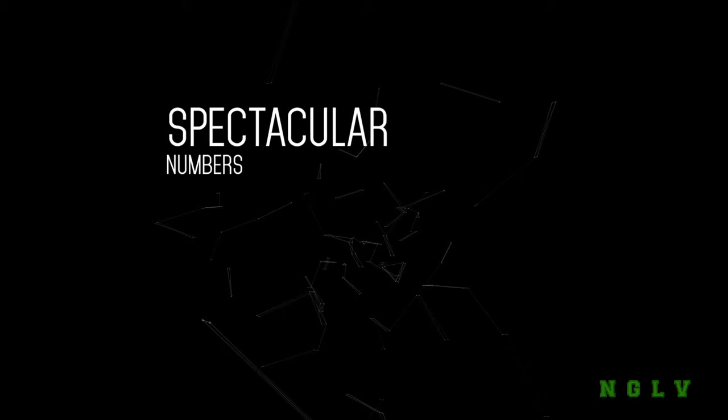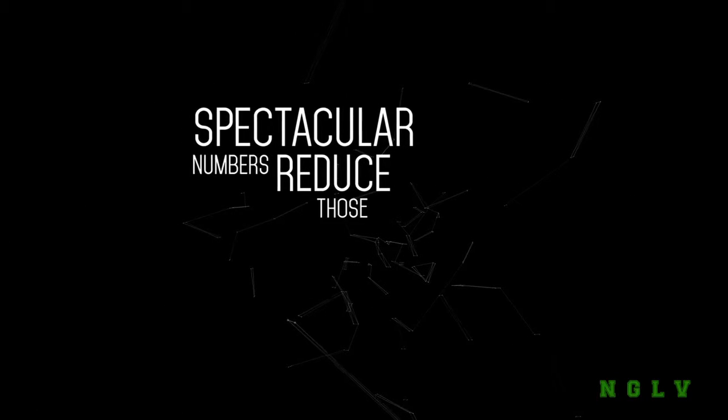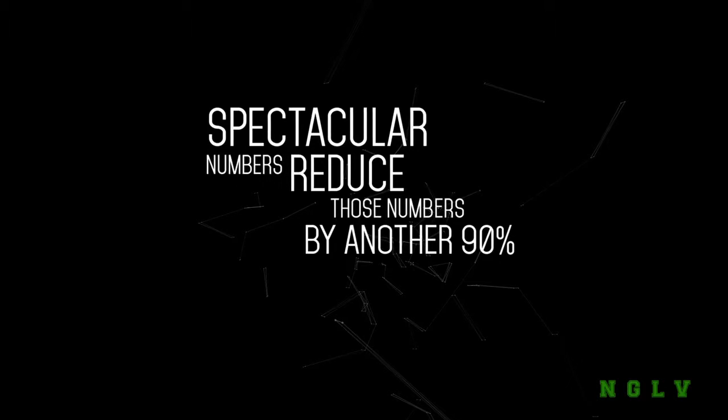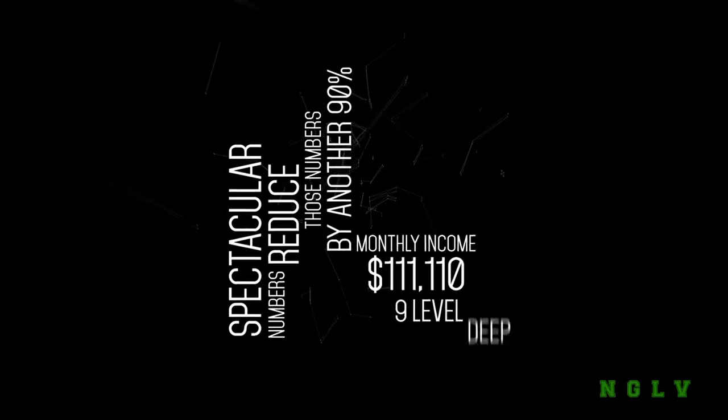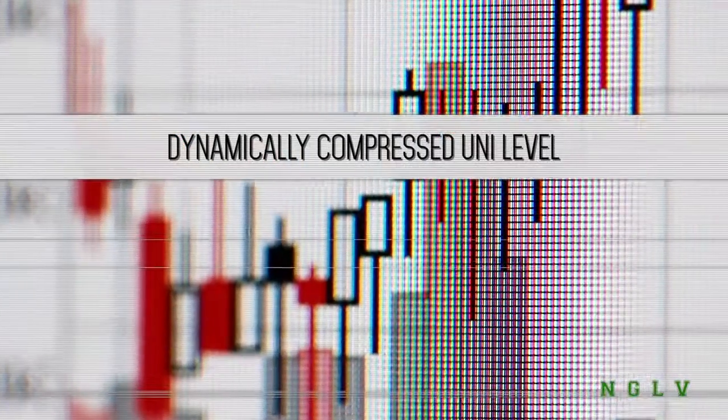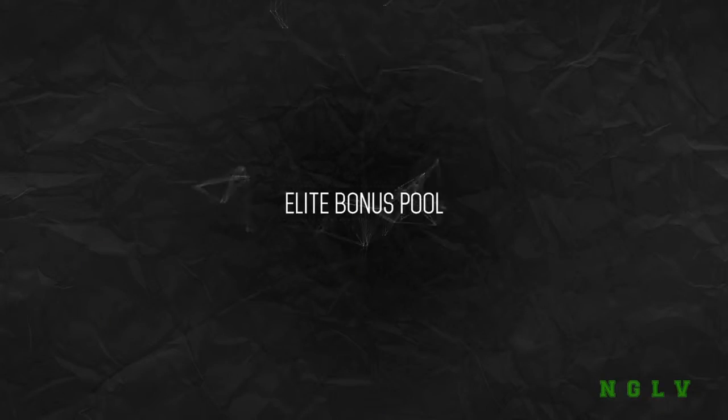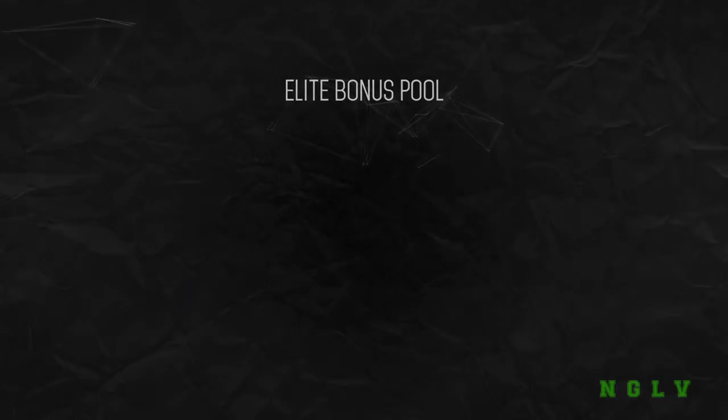Now, of course, those are spectacular numbers. So let's reduce those numbers by another 90%. You'd still be looking at a monthly income of $111,110 in your nine-level dynamically compressed uni-level. On top of this, you'd have a huge slice of the monthly elite bonus pool.